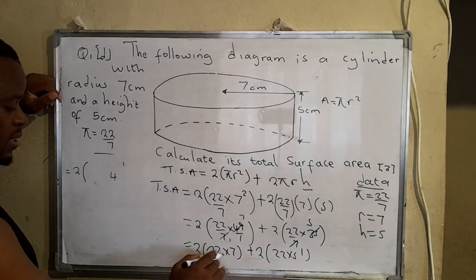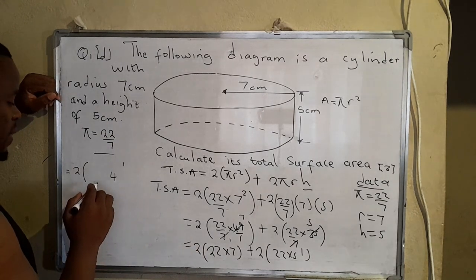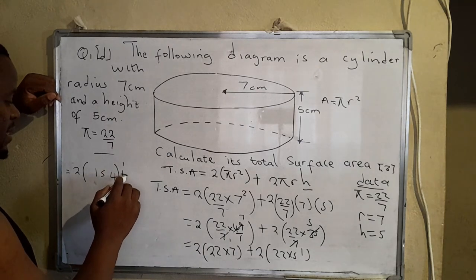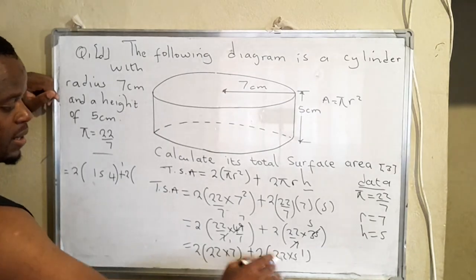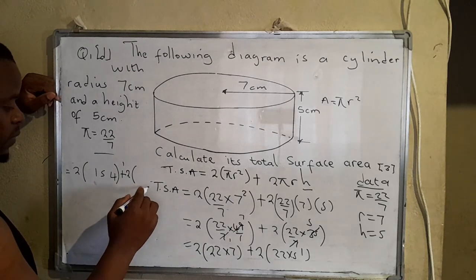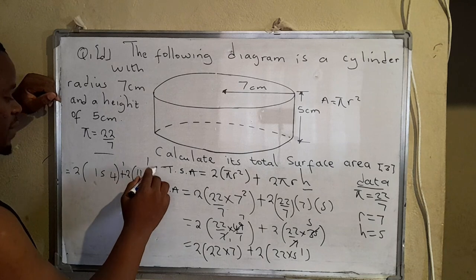We can remember 1, 7 times 2, 14 plus 1, that's 15. So that would be 154. Plus 2 on the outside, then 5 times 2, that would be 10, then you remember 1. 5 times 2, 10 plus 1, 11.